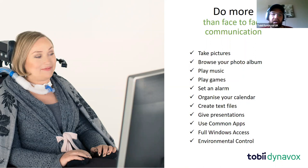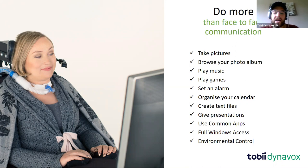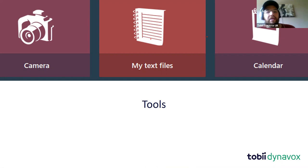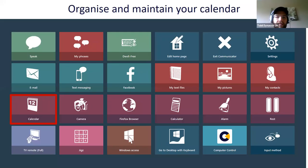Some of the things we're going to look at today in the 'Do More' section of Communicator include: taking and organizing pictures, playing music, playing games, setting alarms, organizing calendars, giving presentations, using common day-to-day apps and websites, and accessing Windows in general - full access to computers and laptops - as well as a bit on environmental control at the end.